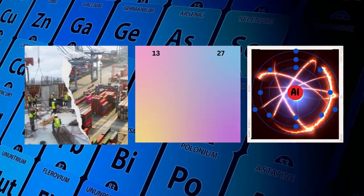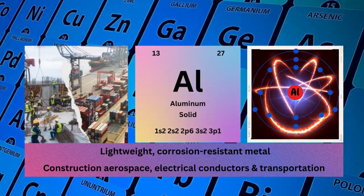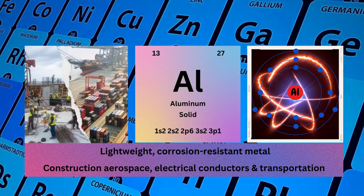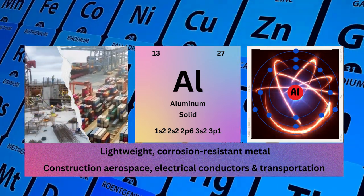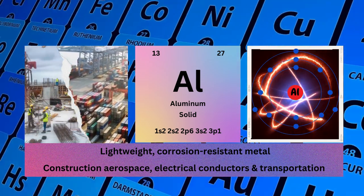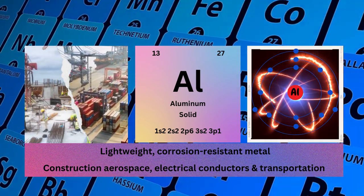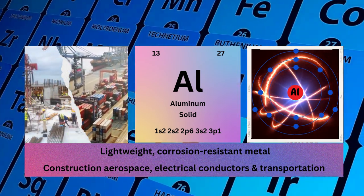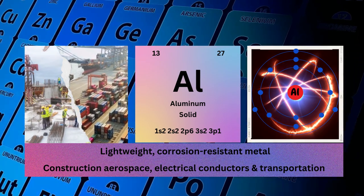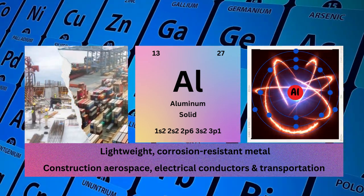Aluminum, atomic number 13, mass number 27, symbol Al, state solid, electronic configuration 1s²2s²2p⁶3s²3p¹. Physical properties: lightweight, corrosion-resistant metal. Aluminum used in construction, aerospace, electrical conductors, and transportation.